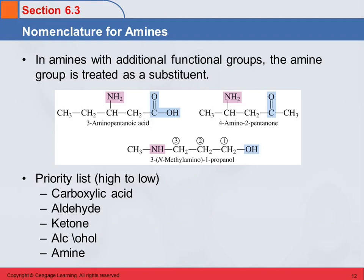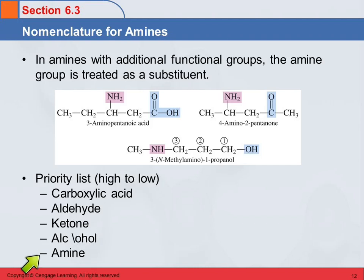When you have an amine that has other functional groups present as well — like an alcohol or an aldehyde — the amine group is always treated as a substituent. Here's our updated priority list: carboxylic acid is the highest priority, then aldehyde, ketone, alcohol, and amine. An amine is the lowest priority functional group, so any of these other groups we've learned about take precedence over the amine.